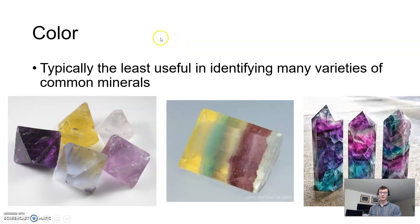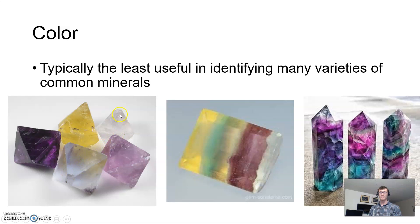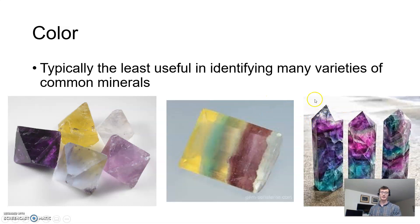Finally, we have the color of the mineral itself. While this is sometimes what we go to first to identify minerals, it's really the least reliable indicator. There are a ton of different colors a mineral can take. For example, all of these — purple, a muddy gray, clear, yellow — these are all the exact same mineral. One sample even has multiple colors within it. You'd be tempted to think they're different minerals, but they're not. They're all the same mineral, just with different coloration.